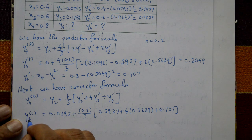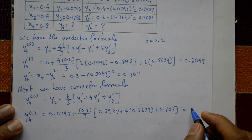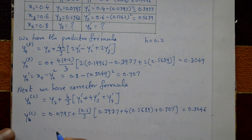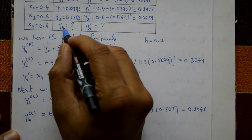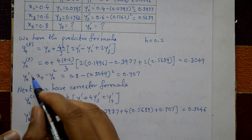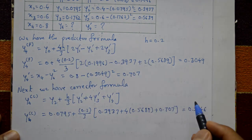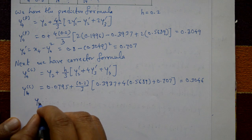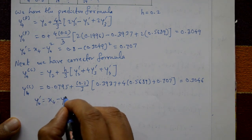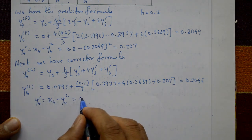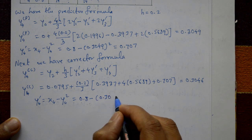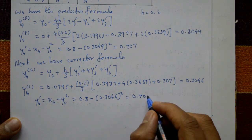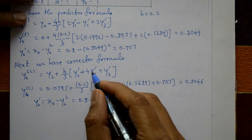The corrector formula result is y4(C) = 0.3046. Now we find the updated y4' using this corrected value: y4' = x4 - y4² = 0.8 - (0.3046)² = 0.7072.